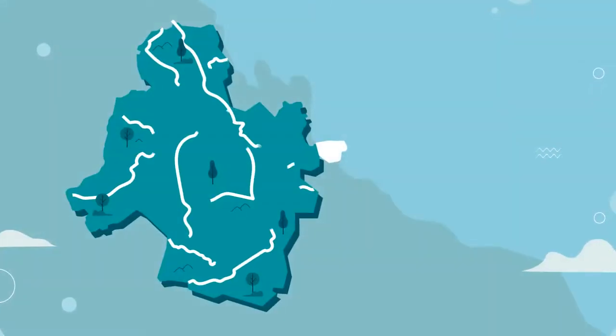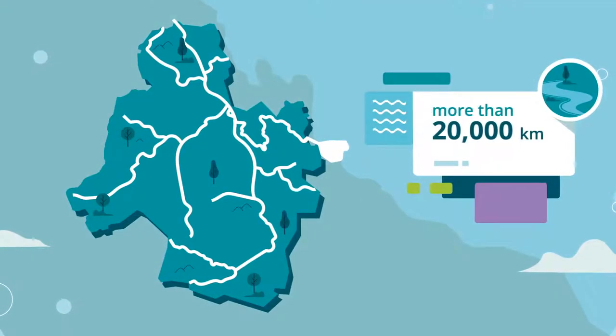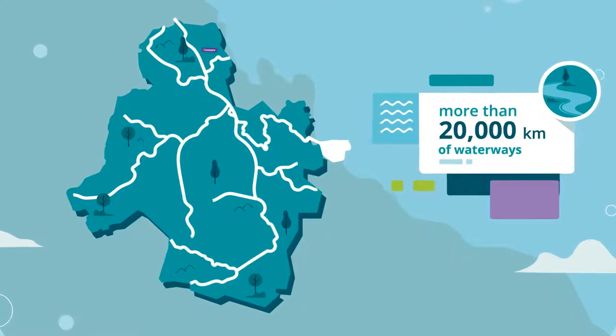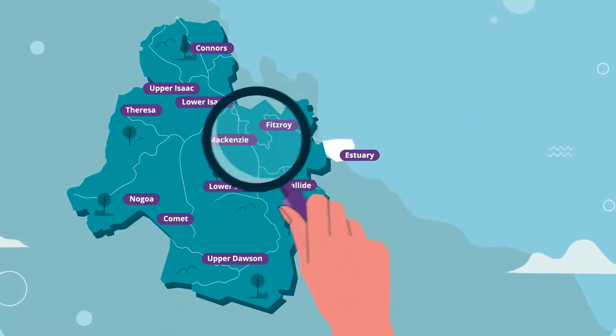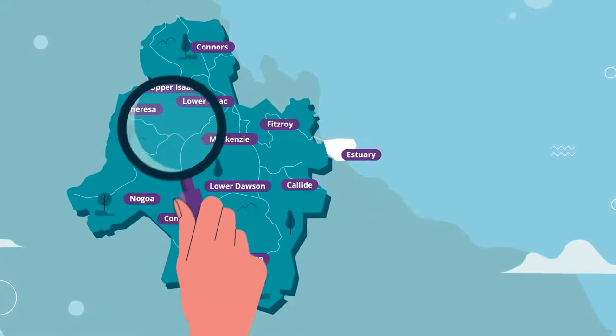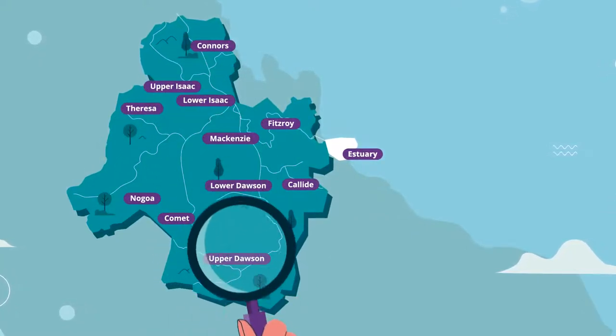It is a tremendous expanse of land that includes more than 20,000 kilometers of waterways, broken up into 12 reporting areas, so ongoing monitoring and reporting is essential to determine how our waterways are functioning over time.